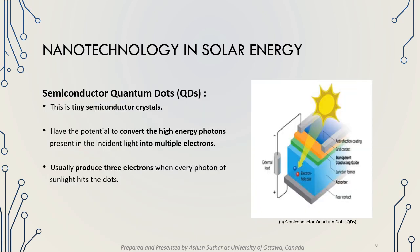Another nanomaterial is the semiconductor quantum dot, which is a tiny semiconductor crystal. It has the potential to convert high-energy photons in incident light into multiple electrons. When a photon of sunlight hits a semiconductor quantum dot, it produces 3 electrons. By generating multiple electrons, it can produce more solar energy compared to a conventional silicon solar cell.